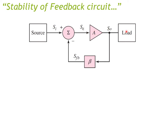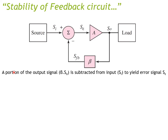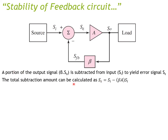The subtraction is the key to providing a negative feedback loop — a portion of the output signal is subtracted from the input. The mathematical quantity for that subtraction is β·A, which represents how much signal was subtracted.